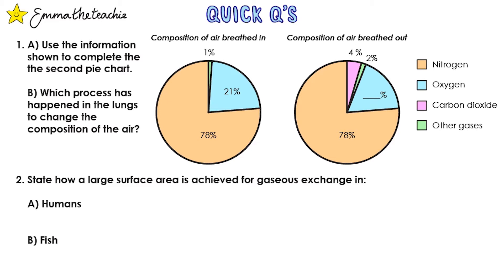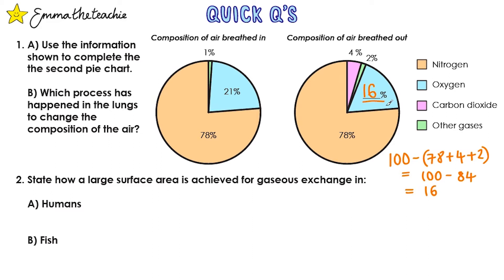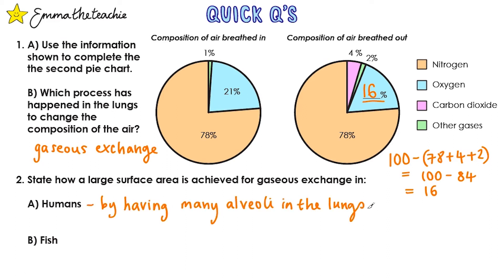Let's test what you've learned. Pause the video and try these questions, then press play when you want to mark them with me. Question 1a: use the information shown to complete the second pie chart. We're looking at the composition of air breathed in versus air breathed out, and we're missing a value. The percentage needs to add up to 100, so we do 100 take away the values given: 100 take away 84 gives us 16. Question 1b: which process has happened in the lungs to change the composition of the air? This is gas exchange, or gaseous exchange. Question 2: state how a large surface area is achieved for gaseous exchange in A) humans — this is by having many alveoli in the lungs — and B) fish — this is by having lots of gill filaments in the gills.